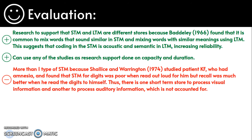However, a weakness is that there is more than one type of short-term memory. Shallice and Warrington in 1974 studied a patient called KF who had amnesia, and found that his short-term memory for digits was poor when read out loud, but much better when he read the digits to himself. This suggests there is one short-term memory store to process visual information and another to process auditory information, which is not accounted for by the multi-store model.